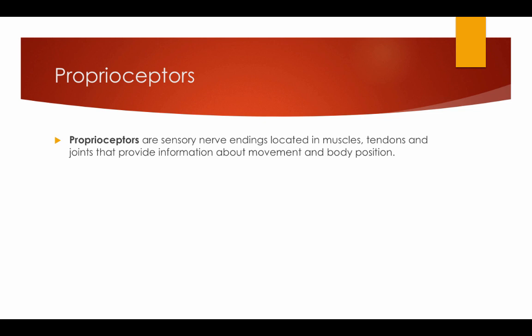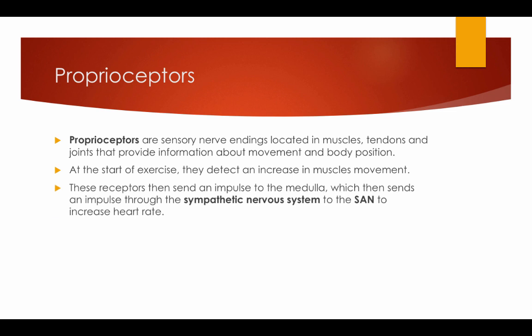Proprioceptors are sensory nerve endings located in muscles, tendons, and joints that provide information about movement and body position. At the start of exercise, they detect an increase in muscle movement. These receptors then send an impulse to the medulla, which then sends an impulse through the sympathetic nervous system to the SAN to increase the heart rate. When the parasympathetic system stimulates the SAN, the heart rate decreases.